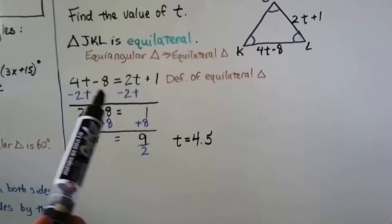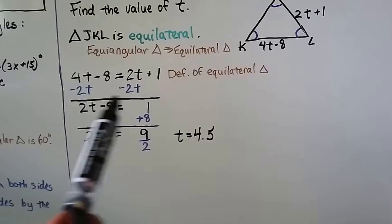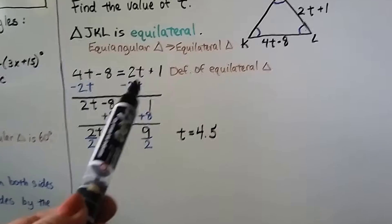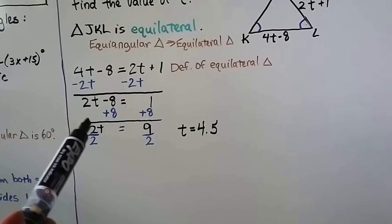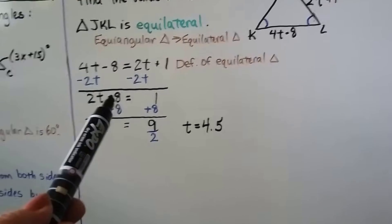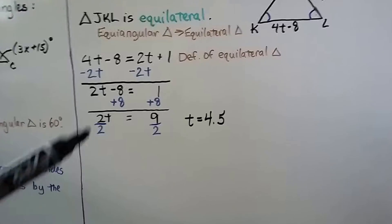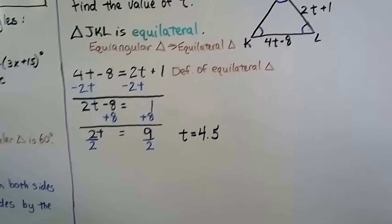We can either start by moving one of the numbers or we can move the variable. So starting with the variable, we can get rid of the 2t from this side by subtracting 2t from both sides. That's going to leave us with 2t minus 8 is equal to 1. Now we can get rid of this negative 8 by adding 8, and we get 2t equals 9. Divide both sides by this coefficient 2, and we get that t is equal to 4.5.